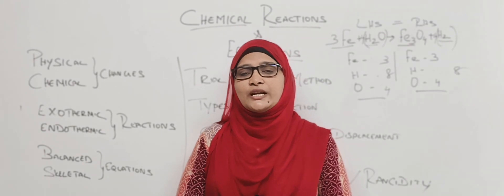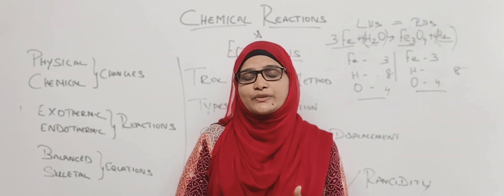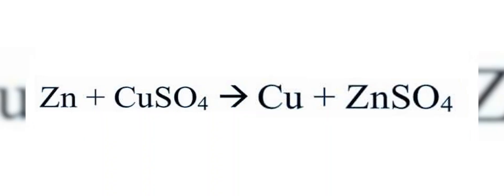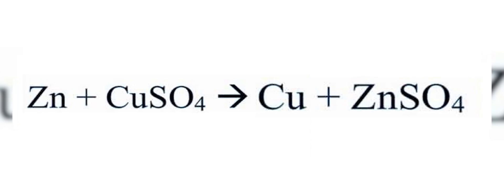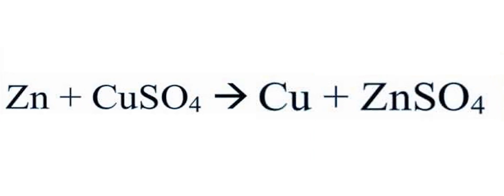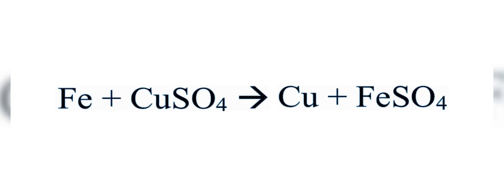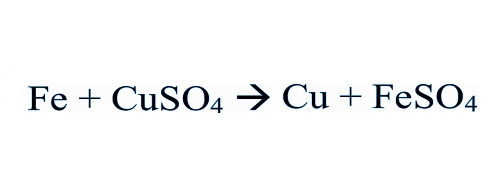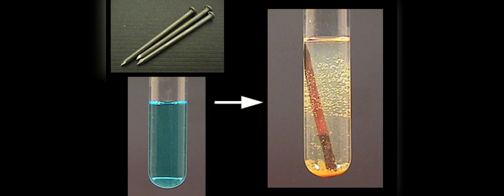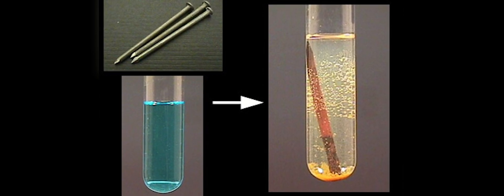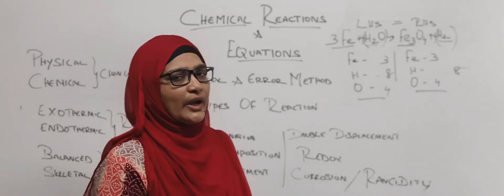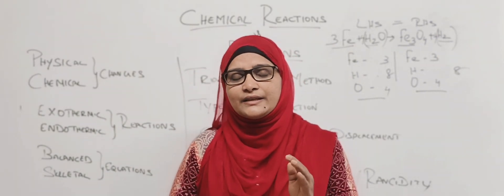The third reaction is displacement reaction. A highly reactive substance will replace a less reactive substance. For example, zinc plus copper sulphate gives zinc sulphate plus copper — zinc is more reactive than copper. Similarly, iron plus copper sulphate gives iron sulphate plus copper — iron is more reactive than copper. The displaced substance makes it a displacement reaction.